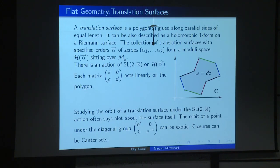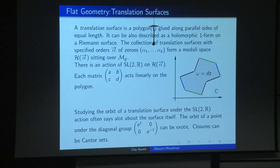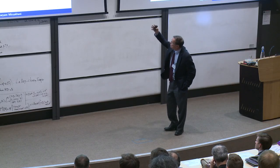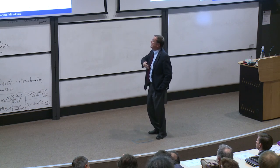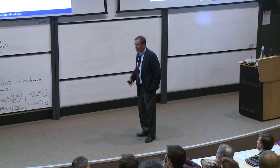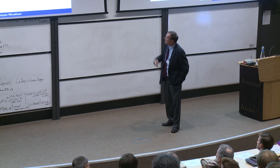Much of the interest of the subject comes from studying the action of the group SL(2,R) on this moduli space. You could vary the side lengths of that polygon to get families of identified polygons. The group SL(2,R) acts in a very natural way because a 2×2 matrix acts on the polygon as a linear transformation in the plane. You care about the individual translation surface, and you often study it by examining its SL(2,R) orbit.